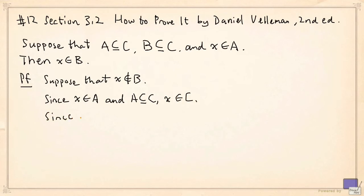And since by assumption, x is not in B, and B is a subset of C, x cannot be in C.